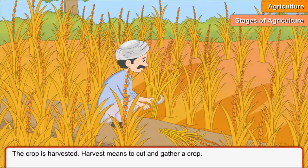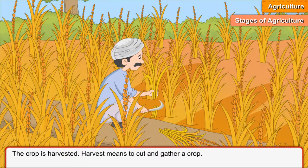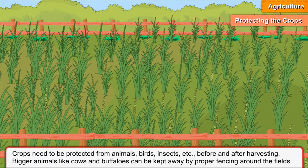The crop is harvested. Harvest means to cut and gather a crop. Crops need to be protected from animals, birds, and insects before and after harvesting.